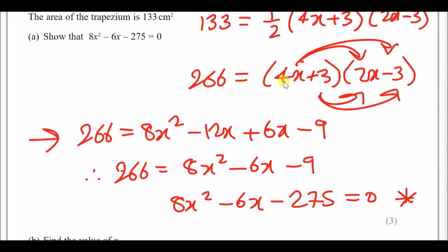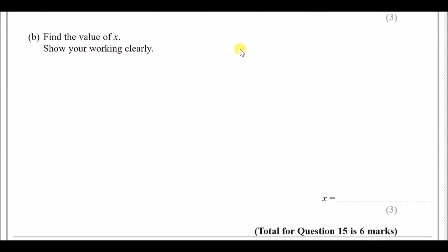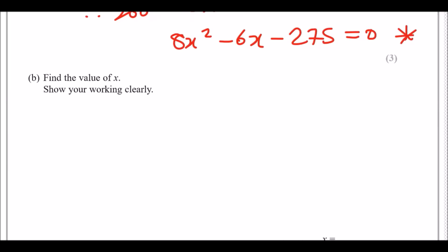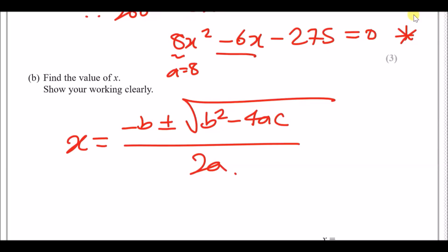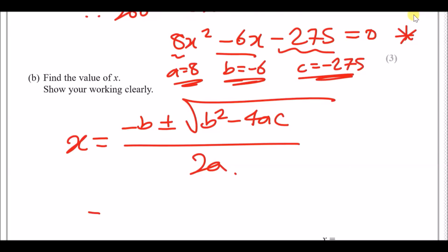Part b: find the value of x by solving the quadratic using the quadratic formula given in the booklet: x = (−b ± √(b² − 4ac)) / 2a. Here a = 8, b = −6, and c = −275. Substituting: x = (6 ± √(36 − 4 × 8 × −275)) / (2 × 8).